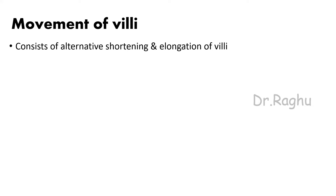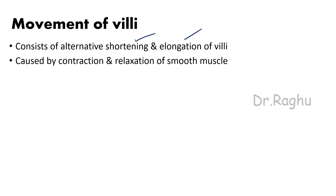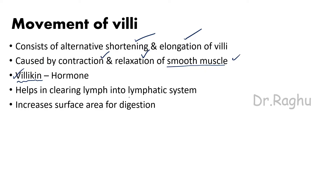The last movement is the movement of the villi: alternative shortening and elongation of the villi. This occurs because of alternative contraction and relaxation of the smooth muscle layers that also enter into the villi. This is aided by a hormone called villikin. Its functions are: helping clear lymph into the lymphatic system and increasing the surface area for digestion — especially when villi elongate, more surface area becomes available.